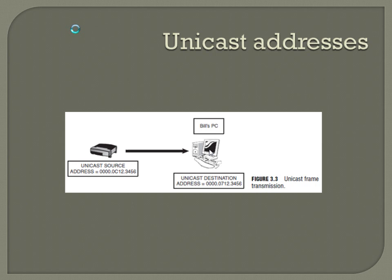Unicast is usually when you're sending data to a single subscriber. We're not even looking at the IP layer right now, so the addresses listed here are MAC addresses, not IP addresses. A unicast Layer 2 Ethernet frame is from one unicast address to a single other unicast address — pretty simple. That's going to be like what most of the data passing is, one single device to another single device at Layer 2.